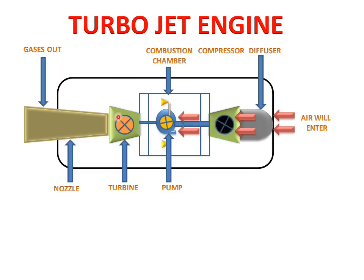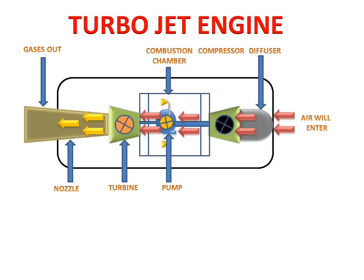The gases coming out from the turbine will go to the exit nozzle and increase the thrust, giving a back thrust to the turbojet. These gases give back thrust according to Newton's third law of motion — every action has an equal and opposite reaction. This back thrust causes the engine to move at high speed.